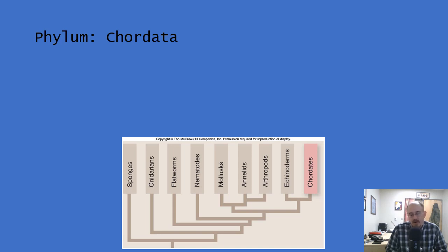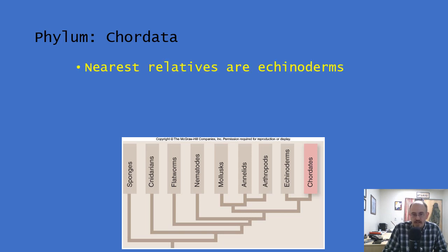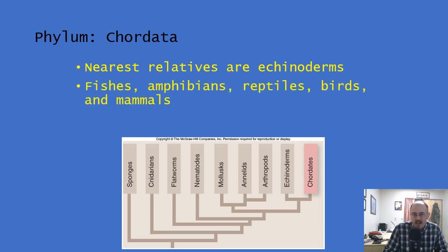When we last talked, we talked about a lot of the invertebrates. The last group I want to mention are the echinoderms, like the starfish. The echinoderms are the sister group to chordates — the group that we are in, chordata. So the nearest relative are the starfish. Starfish actually lost their brain through the process of evolution and take on a kind of an odd lifestyle.